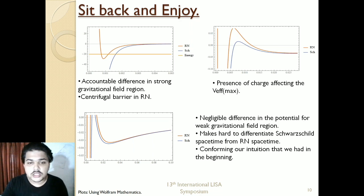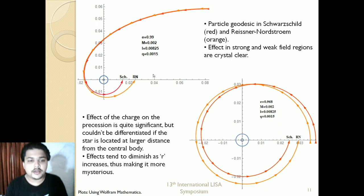After confirming our intuition, we will be moving on to see the trajectories in these spacetimes. The red trajectory is for the Schwarzschild black hole and the orange is when the particle is moving in the Reissner-Nordström black hole. It is crystal clear that in the weak gravity region they are actually moving in the same path—they are immensely close, moving in the same path. In the strong gravity region we have a sufficient, effective difference. The effect of the charge and the precession is quite significant, and that can be seen from this image. But I am repeating again: what if the star was located farther away? We can confirm that the effect of the charge is diminishing as r is increasing.